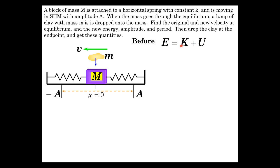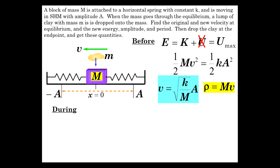Before the clay is dropped, energy is K plus U, and there is no U because it's all K right in the middle. So that's also equal to the maximum potential energy, which is one-half k A squared. So one-half mv squared is one-half k A squared. Let us solve for the v at the center, square root of k over m A. Now, we also know that the momentum is mv, so we're going to have to consider that. And we also know it's an inelastic collision.